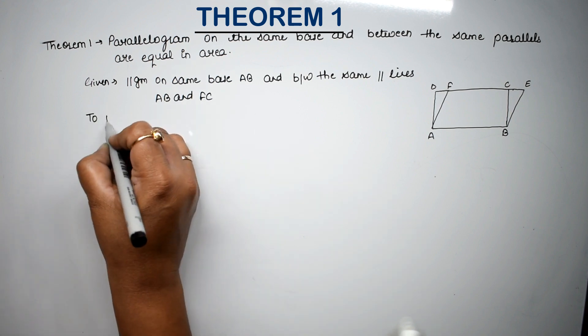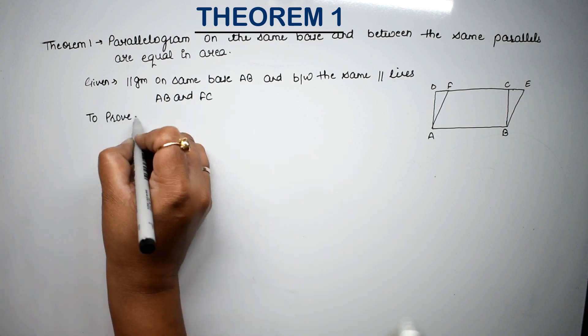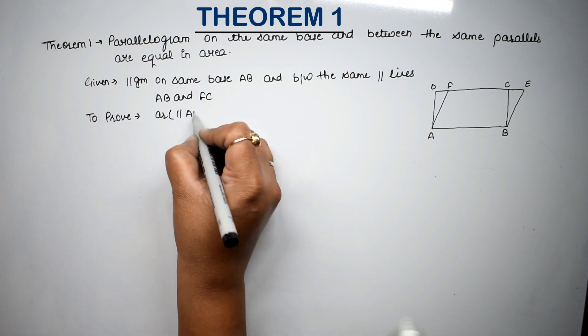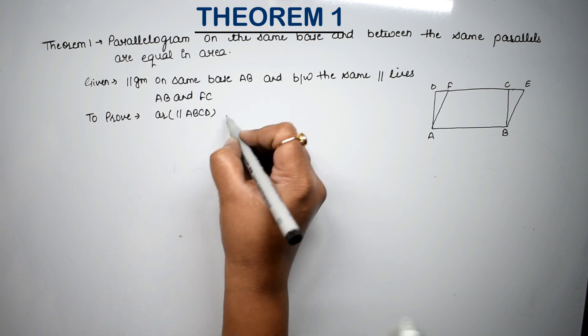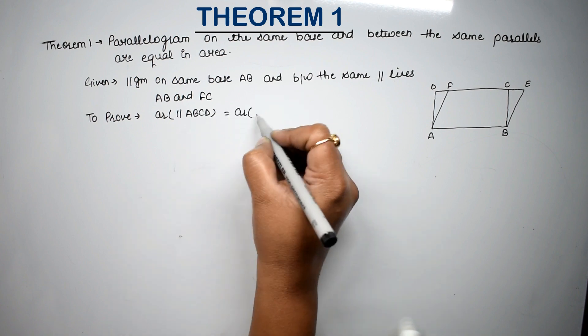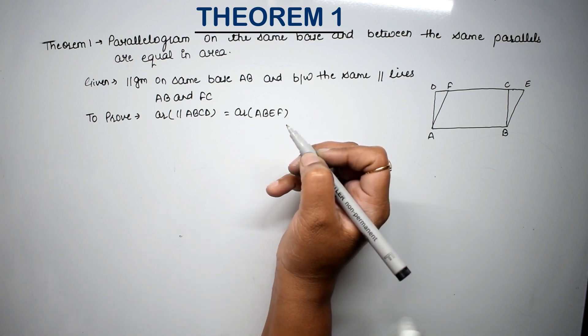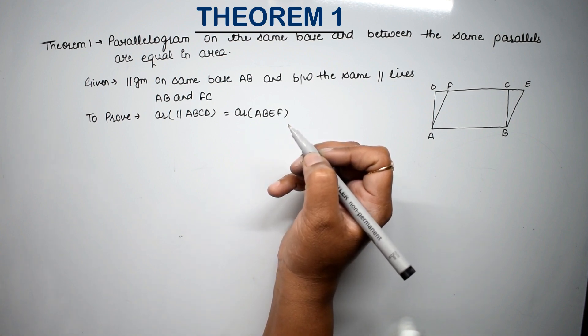Now what do we have to prove? To prove that area of parallelogram ABCD is equal. Which area? ABEF is equal. This is how we have proved. So friends, how do we prove? We can see.